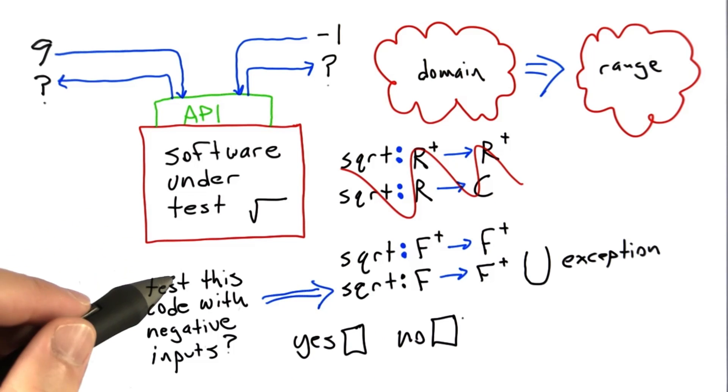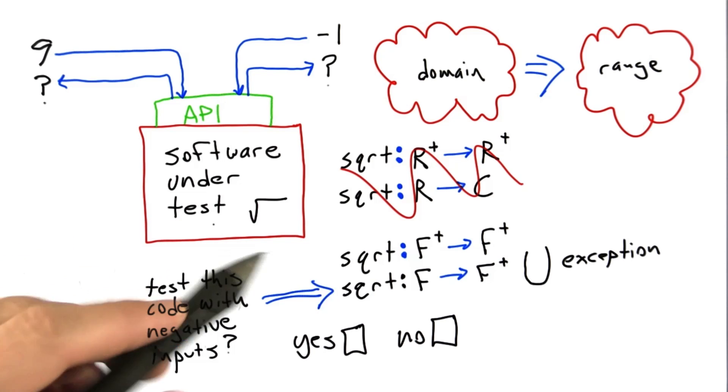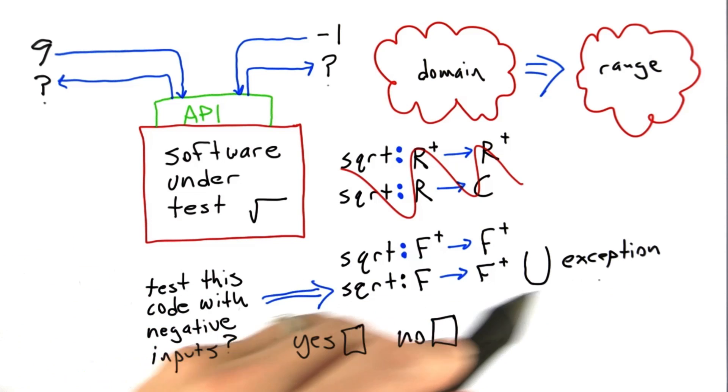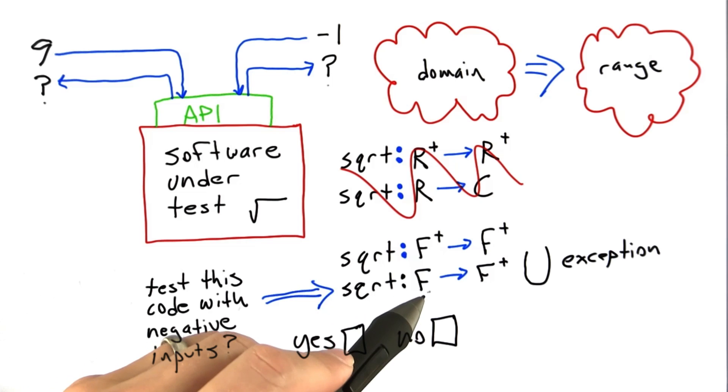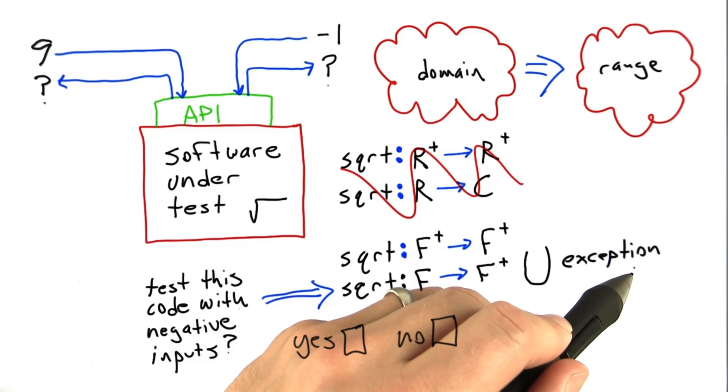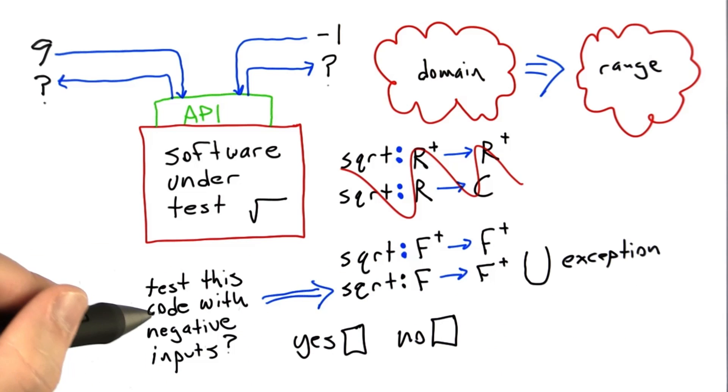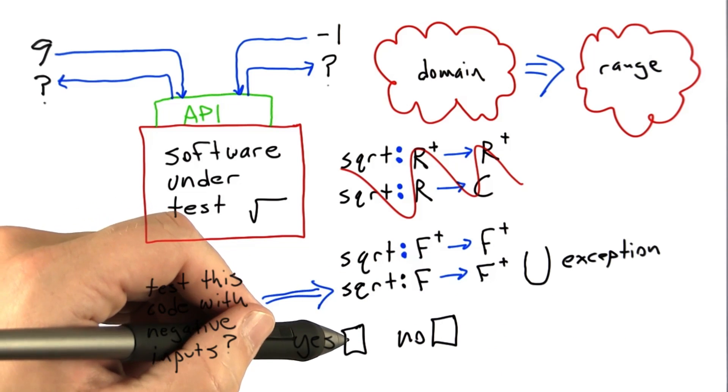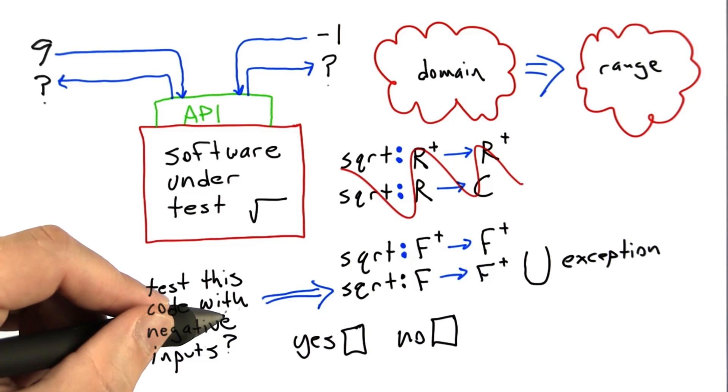Let's bring the discussion back to testing and take a quiz. The question is: given this specification where square root maps the full set of floating point numbers onto either a floating point number or a math exception, should we test this code with negative inputs? The answers are either yes or no. Take a minute now to mark down your answer.